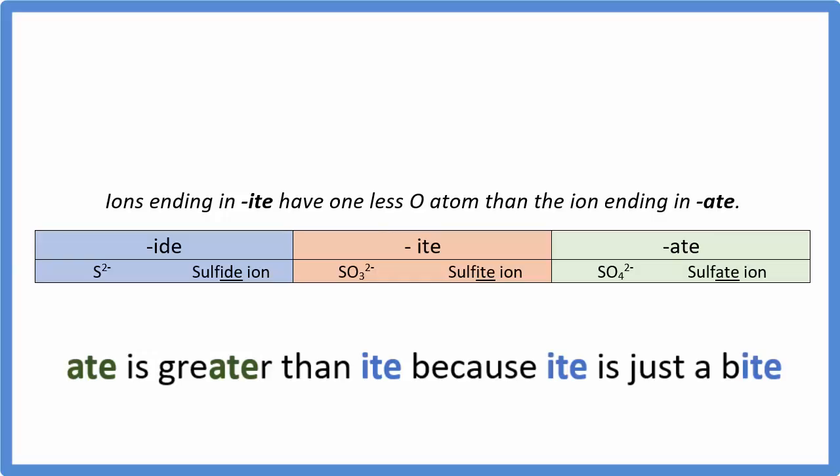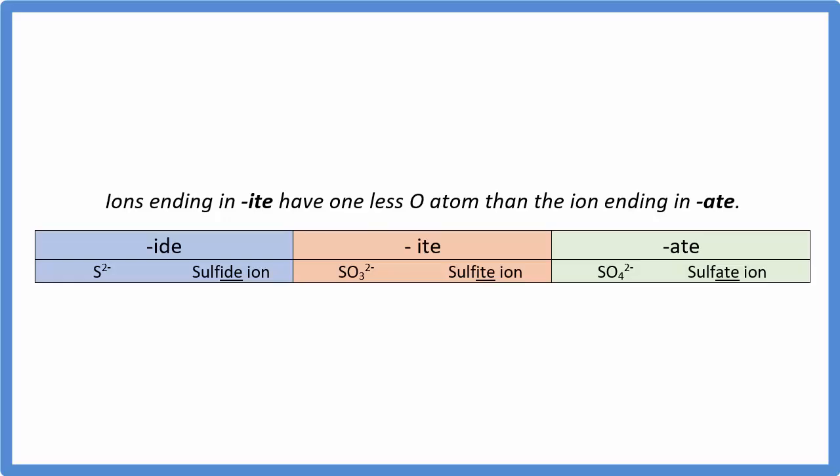We can also see from the table that if we have elements on the periodic table, they usually end in IDE. So if I had the ion for sulfur, that would be S 2-, and it would be the sulfide ion. Don't get IDE and ITE confused. IDE is for the periodic table, ITE, polyatomic ion table.